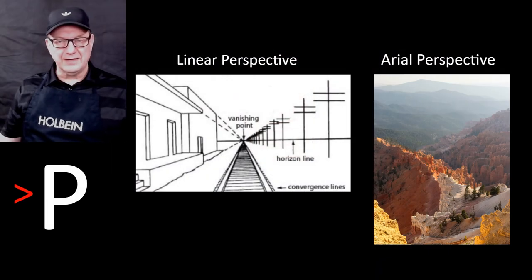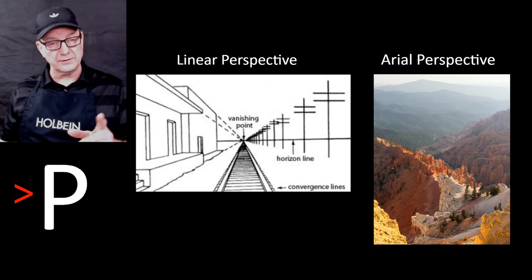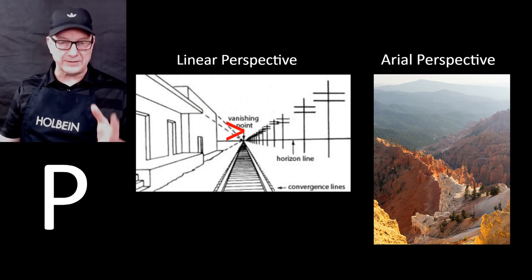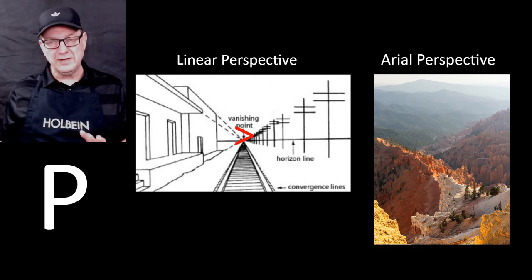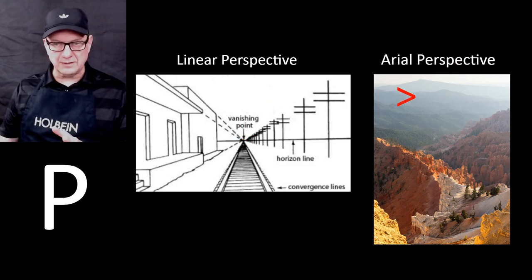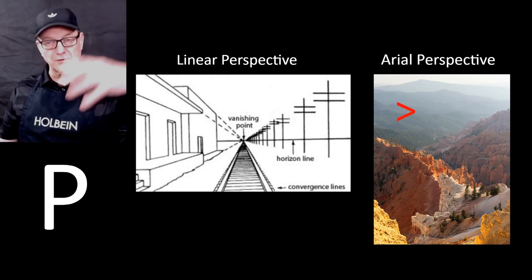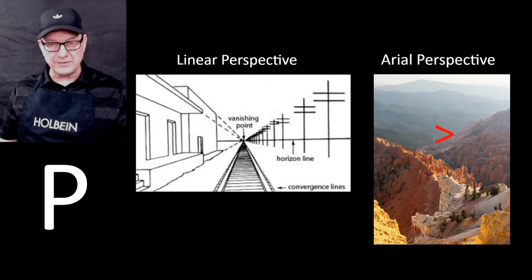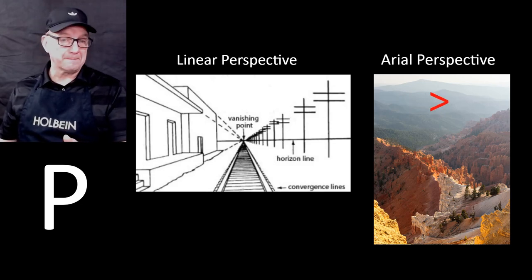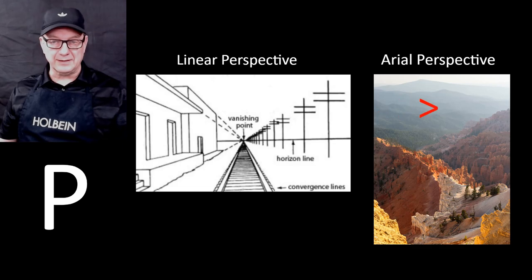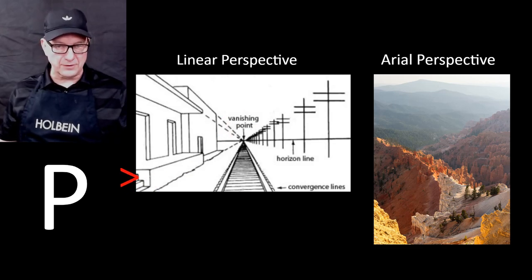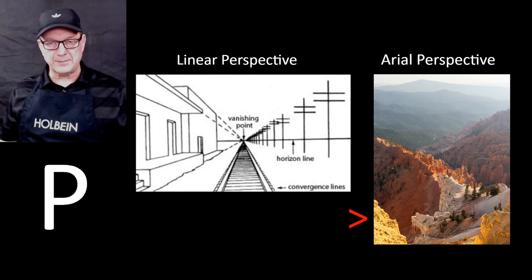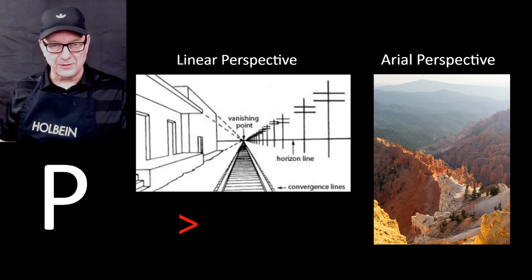P is for perspective, and there are actually two kinds. One is linear perspective — that's where you have the vanishing point, the horizon line, and lines going to the vanishing point. The other I call aerial or atmospheric perspective, where the atmosphere engulfs distant elements. Those mountains way back here are probably the same red color, but in the distance they appear almost gray because the atmosphere is engulfing that area, creating a sense of depth from foreground to background.